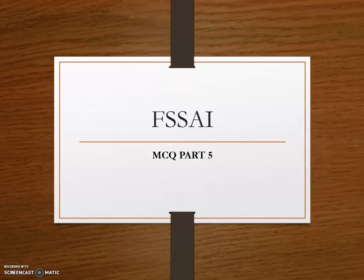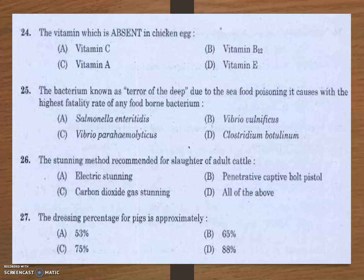Hi friends, welcome to our channel Knowledge Rain. Today's video is the continuation of yesterday's question paper discussion. The first question: the vitamin which is absent in chicken egg. The options are vitamin C, vitamin B12, vitamin A, and vitamin E.